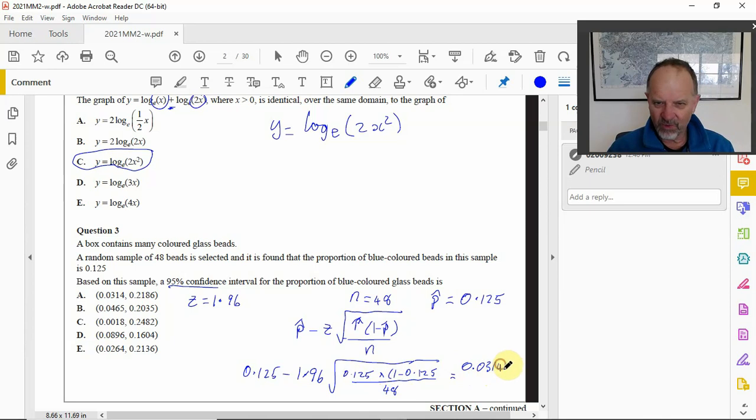When you work that one out you get 0.03143. So I'm going to look at the bottom edge of our confidence interval. I'm just looking at one end, so let's look here: 0.0314.